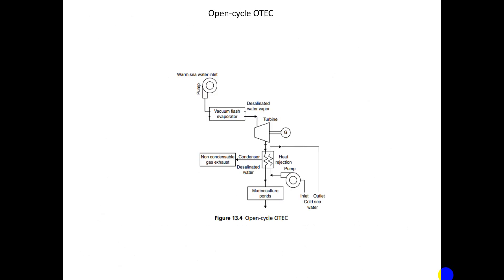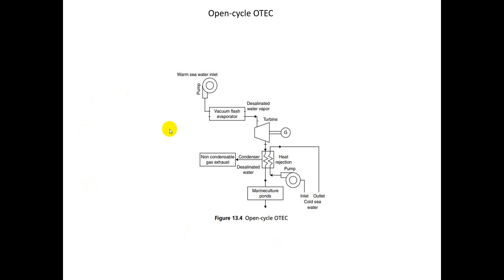Looking at the diagram, this is the open loop OTEC: the input is warm sea water which enters through a pump going to the flash vacuum evaporator, producing desalinated water vapor. It then moves to the turbine to drive the turbine blades and generate electricity. From there it moves to the heat condenser, after which cold sea water is discharged outside. From the condenser, non-condensable gases are exhausted and the desalinated water is directed to marine culture ponds. This is an open cycle — not a closed loop — and we call it open cycle OTEC.